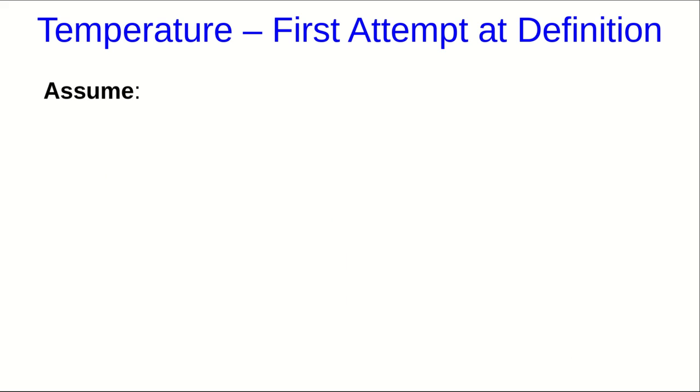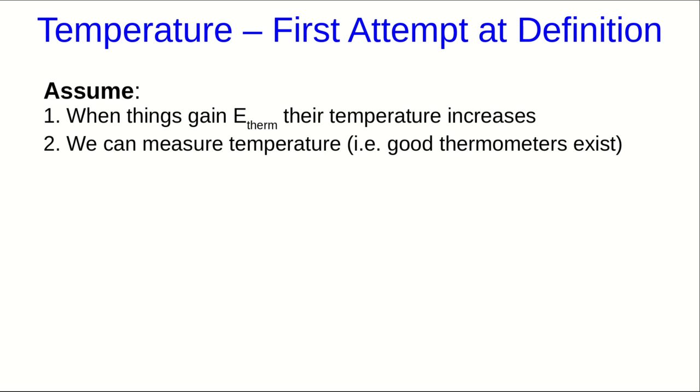So let's state some assumptions. We are assuming that temperature is part of the state of objects, or in other words, it's a measurable quantity that describes objects, and it's connected with thermal energy. And second of all, as part of that, we're assuming we can measure it. In other words, that there's such a thing as a good thermometer. That may not seem like much of an assumption, but as we go on, you'll see that this isn't as trivial a statement as it might seem at first.